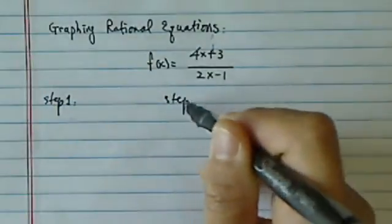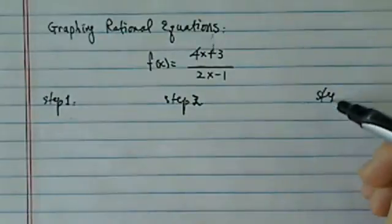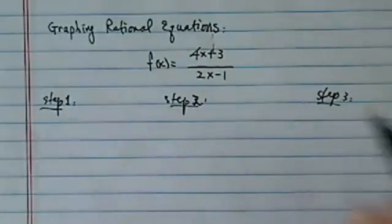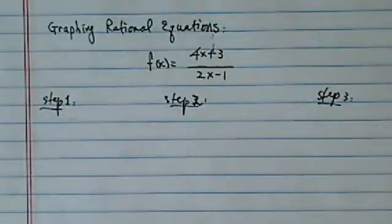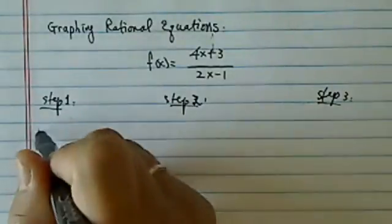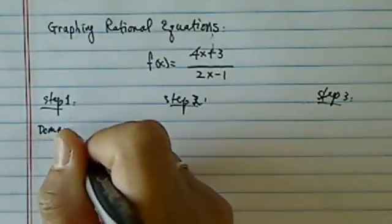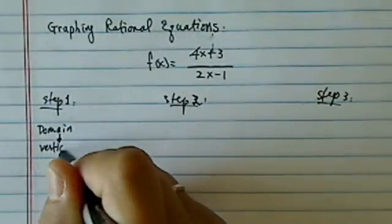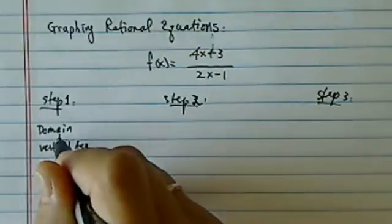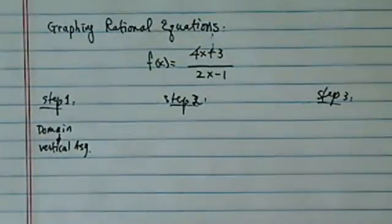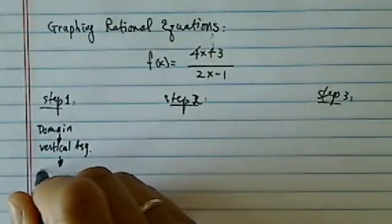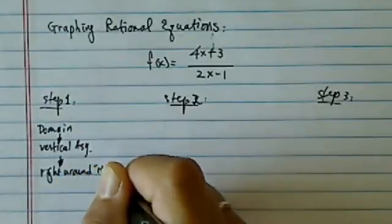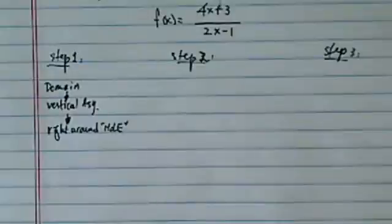So we're going to break it down into three distinct steps. Following those steps and giving you a process, you can always easily graph any rational equations. Step one is we're going to take a look at domain, i.e., what x cannot be or gives you the vertical asymptotes. And then we're going to take a look right around the hole, what I call a hole, what happens.